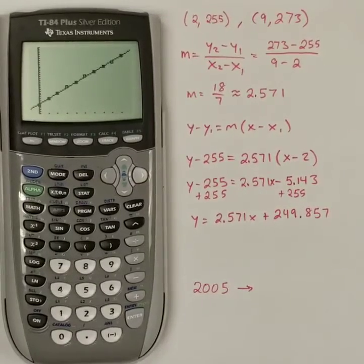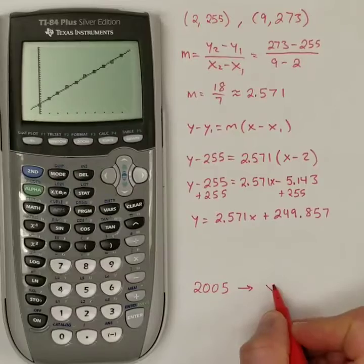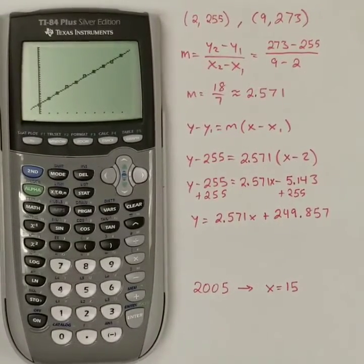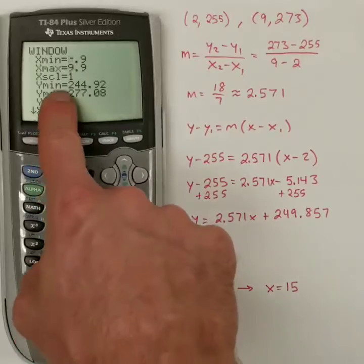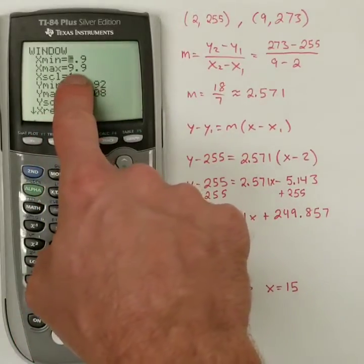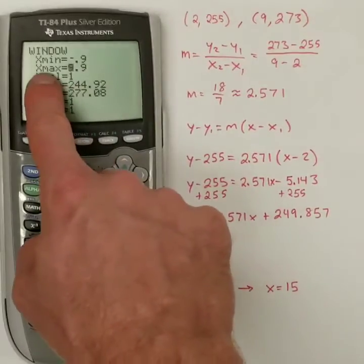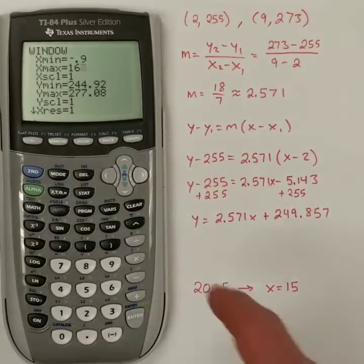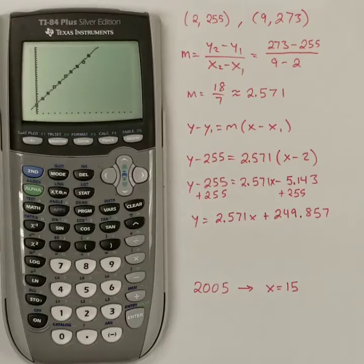And you could just subtract 2005 minus 1990. Now the problem is my window here goes up to around 10. I actually need the window to include that 15. So I'm actually going to go up to the X max and change it to 16 so that I'm going further than what I need. It changes the look of the graph a little bit.